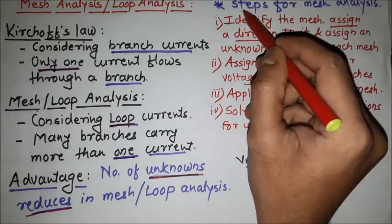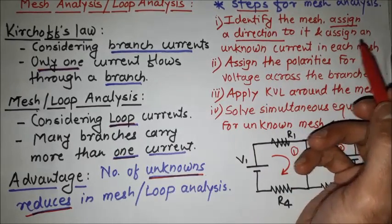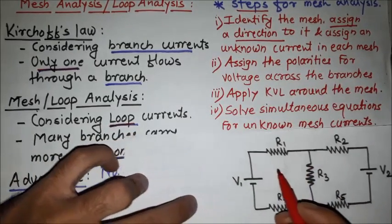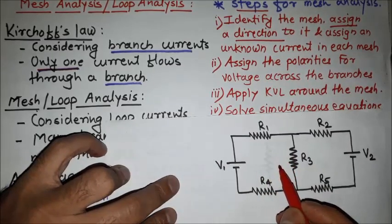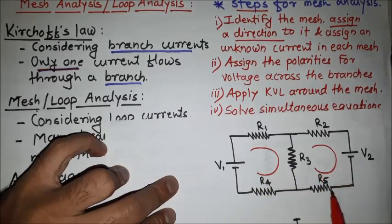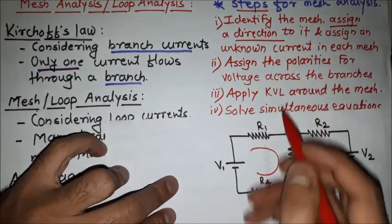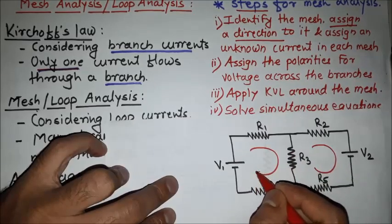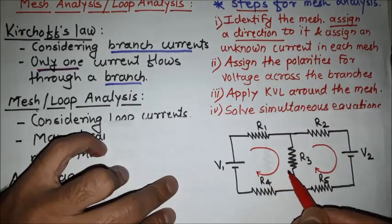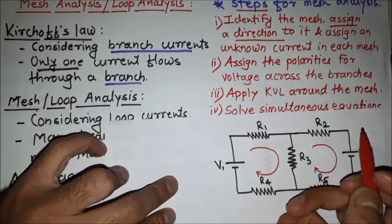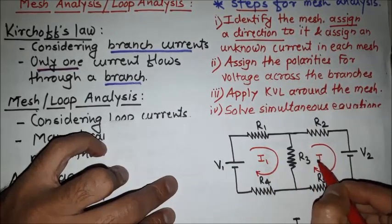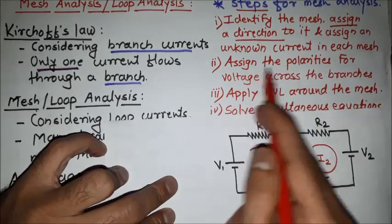Before learning mesh analysis, we need to learn the steps. The first step is to identify the mesh. In this circuit, a mesh is simply a loop. Suppose we consider two loops — we have to identify the mesh and assign a direction to it. I am considering the clockwise direction for both meshes, then assign an unknown current in each mesh: in the first mesh the current is i1, and in the second mesh the current is i2.